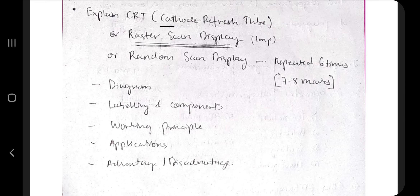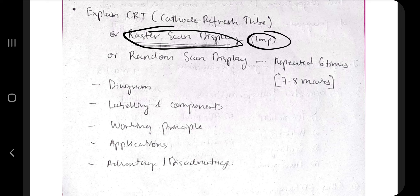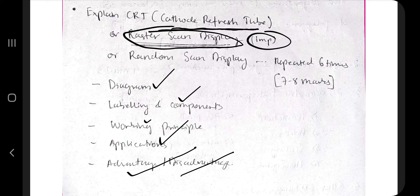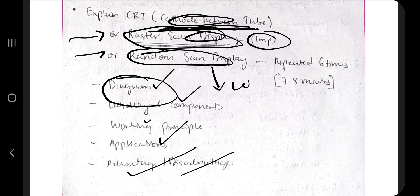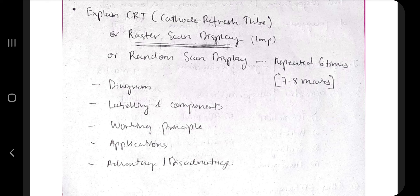The most important topic of Module 1 — the gem of this module — is the raster scan display. You need to draw the diagram, label its components, write its working principle and applications, and if you have time, write the advantages and disadvantages for one or two extra marks. This is based on the CRT (Cathode Ray Tube). Sometimes they ask to define the cathode ray tube. Random scan is also asked but raster scan is asked about 80% of the time, while random scan only about 20%.